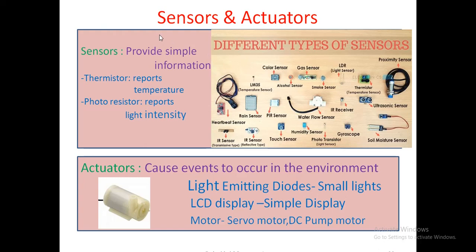What are the other components required to make an embedded system? Very important: sensors and actuators. Sensors provide simple information from the real-time environment. For example: temperature, light intensity, humidity, pressure sensor, water level sensor, soil moisture sensor, optical sensor, gas sensor, proximity sensor, ultrasonic sensor, gyroscope, touch sensor, IR sensor — both receiver and transmitter. These sensors just provide simple information, which you convert using an ADC from analog signal to digital signal and feed into the 8051.